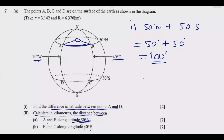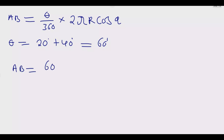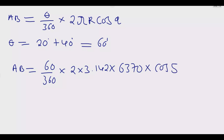Now that we have the angle, we can find AB. AB equals 60 over 360, multiplied by 2 times pi (3.142), times the radius 6370, times cos(50 degrees). Using a calculator, the answer is 4288.366 kilometers, which to three significant figures is 4,290 kilometers.